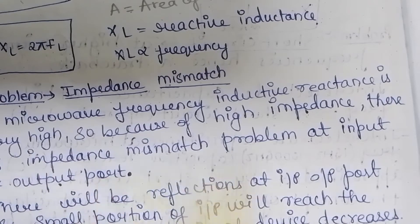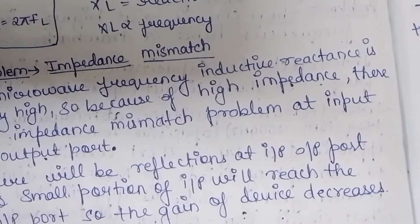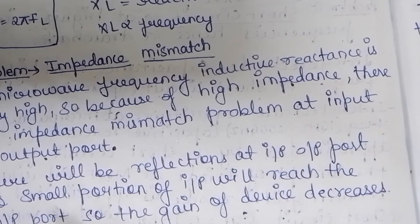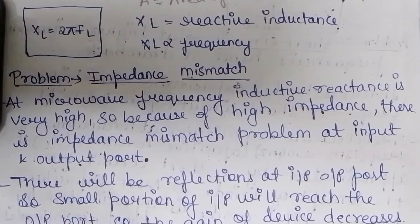Because of the high impedance there is an impedance mismatch problem at the input and output ports. There will be reflections at the input and output ports, so only a small portion of the input will reach the output port and the gain of the device decreases.